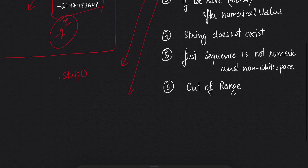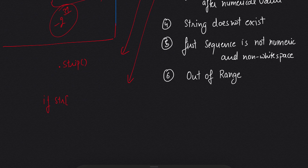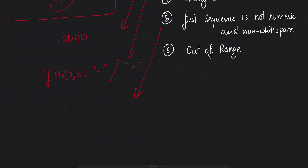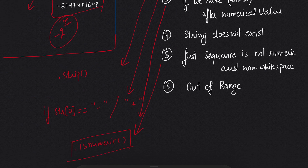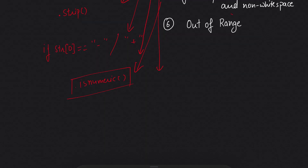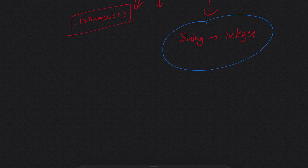Let's see how we will take care of all the edge cases. For the whitespace, we can use the strip function — it will take care of the whitespace. After that, for the sign, we can write: if string at index 0 equals minus, or in the same way check for plus — so we can take care of the minus and plus sign. Then we need to check whether the first sequence is not numeric using isnumeric, which will tell us whether the given element is numeric or not. We can also check the element after a numerical value, and for out-of-range we convert the string to integer and check whether it is out of range.